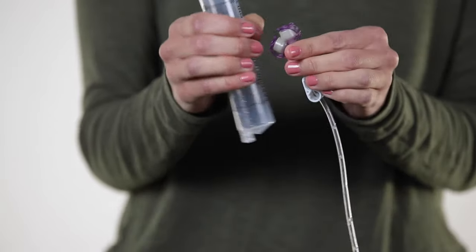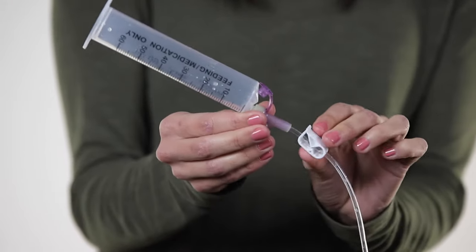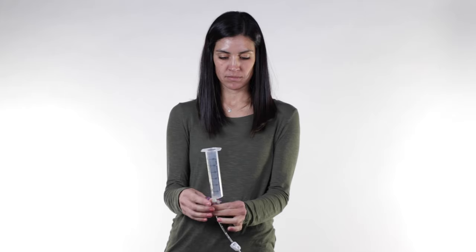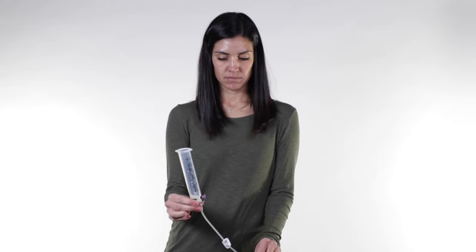Take the plunger out and attach the open syringe to the extension tube. Unclamp the tube and allow any air to escape the tube. You may see fluid come up into the syringe but this is normal.